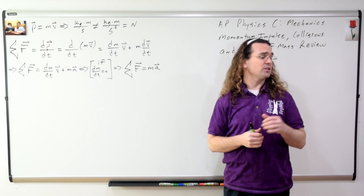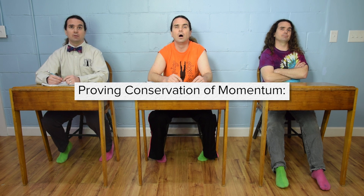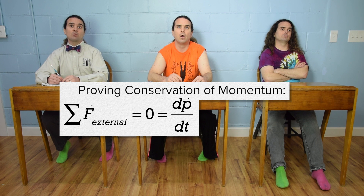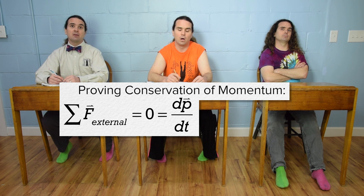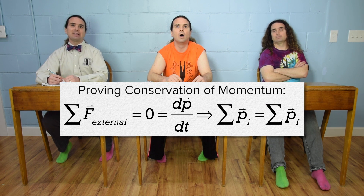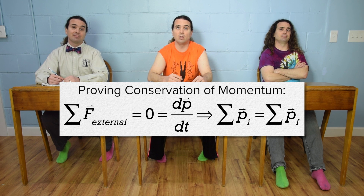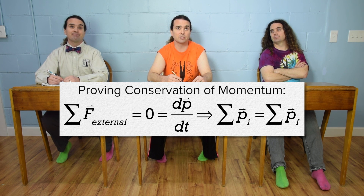When can we use conservation of momentum? When all the forces are internal to the system. If all the forces are internal to the system, then the sum of the external forces acting on the system equals zero, and the derivative of the momentum of the system with respect to time equals zero. Therefore the momentum of the system is not changing, and the sum of the initial momenta equals the sum of the final momenta. Momentum is conserved during all collisions and explosions because all the forces are internal to the system.